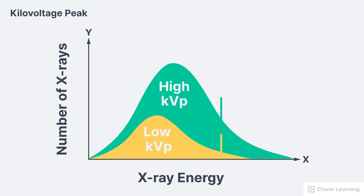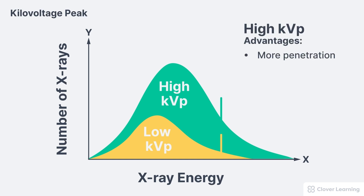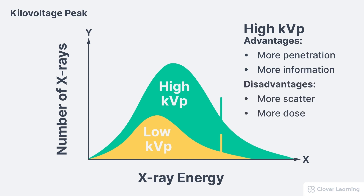So why would we ever want to use an increased beam quality by increasing kVp? There are a few reasons. When we use a higher beam quality, this results in more penetration. More penetration is good because a higher percentage of photons will pass through the patient and add to the radiographic image — so basically, we get more information. This is really important when imaging thicker parts or thicker patients. But when we use a high kVp, there are also some disadvantages, like more scatter and more dose to the patient when no other factors are changed.